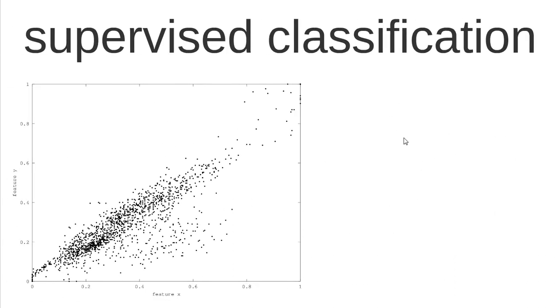We start by supervised classification. When we talk about pattern recognition, we always think that we have a set of instances which can be represented by all these black points here, and all these instances are represented by certain features.